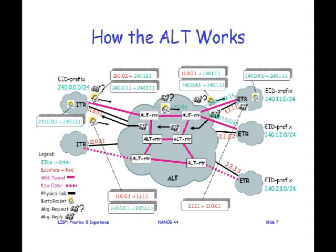To summarize: on the data plane, you encapsulate the packet and send it to the other side and decapsulate it. On the control plane, you advertise as an ETR what EID prefixes you're authoritative for. When an ITR gets a packet without a mapping, it sends a map request into the ALT — which is just an instance of BGP on a separate address space running in a VRF over GRE tunnels — and the packet finds its way to the authoritative ETR, which sends a map reply back. Then the ITR has the mapping and can encapsulate. That's about it, really. The devil's in the details.